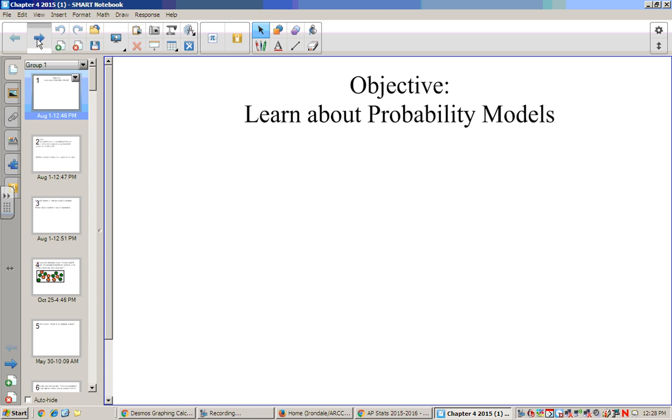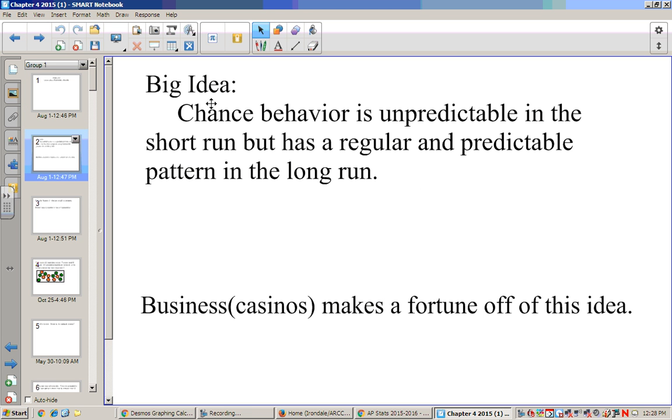The big idea in probability is that chance behavior is unpredictable in the short run, but it has a regular and predictable pattern in the long run. This is what makes casinos so exciting and such a big business. They make a fortune out of this idea, because it's very exciting to think you might win some money on the next hand. But if you stay at the table long enough, you're going to lose all of it.